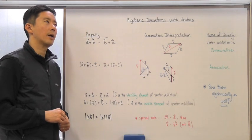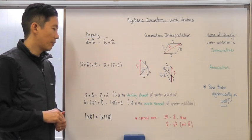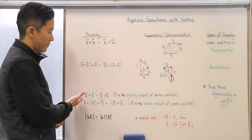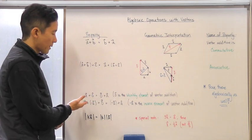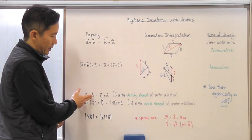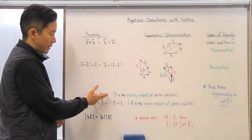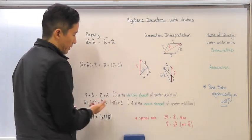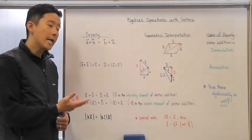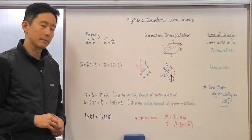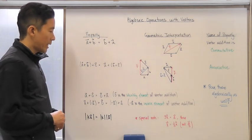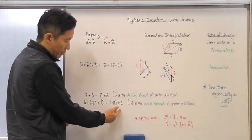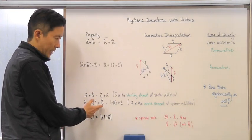Let's continue from a vector perspective with regards to addition. If we take vector a plus the zero vector, that equals the zero vector plus vector a, and both equal vector a. Since the zero vector, when added to any vector, just gives you that same vector back, we call the zero vector the identity element for vector addition.